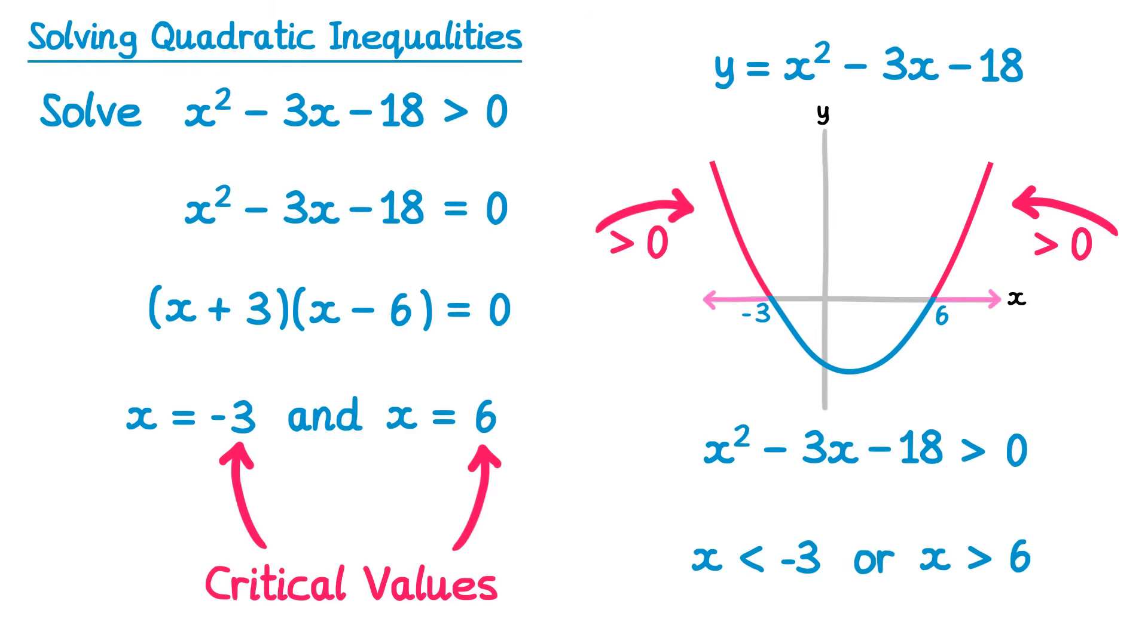When we solve a quadratic equation, we're used to writing the word AND in between, because they're both acceptable solutions. This time we're going to write OR, since you can't have a number that's less than negative 3 and also greater than 6. So when you have inequalities like this, we write an OR instead.